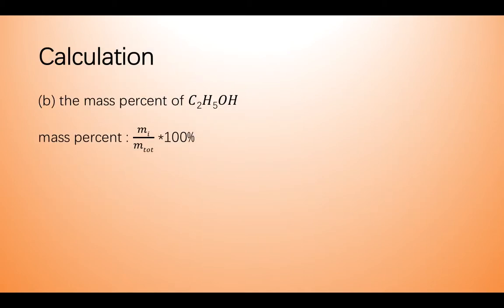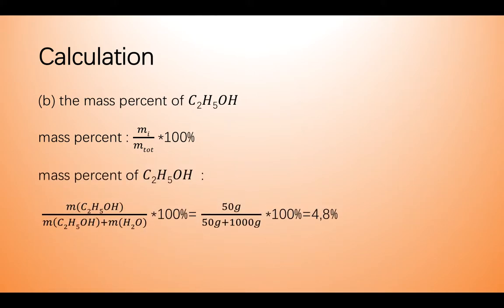The formula of mass percent is equal to the mass of constituents divided by the mass of the total constituents times 100 percent. So 50 divided by 50 plus 1000 times 100 percent is equal to 4.8 percent.